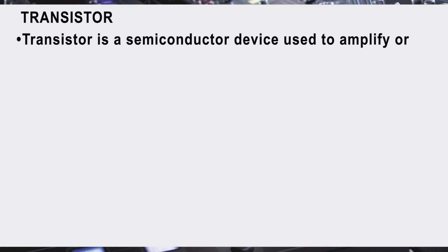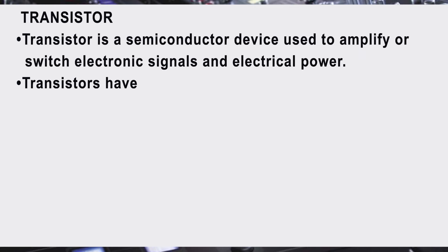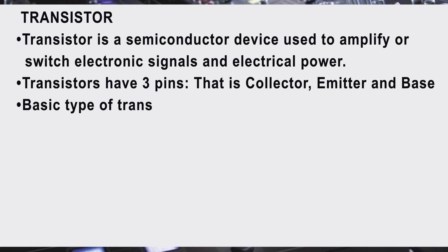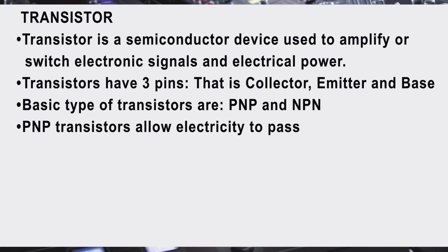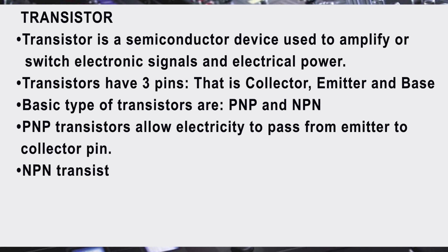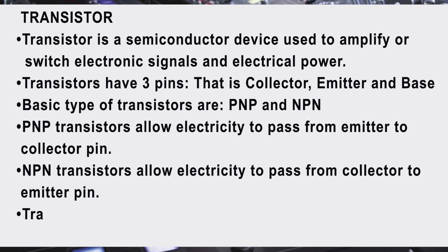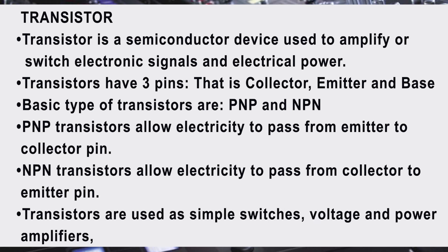Transistor. A transistor is a semiconductor device used to amplify or switch electronic signals and electrical power. Transistors have three pins: collector, emitter, and base. The basic types of transistors are PNP and NPN. PNP transistors allow electricity to pass from emitter to collector pin. Transistors are used as simple switches, voltage and power amplifiers, etc.